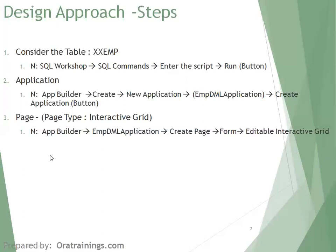The final step is creation of a page. If you're already in the application, simply click on Create Page. Or if you've navigated back to the main screen, go to App Builder, select the application you created, then click on Create Page. In Create Page, it shows different page types available in Apex — select the form type as Form, and then select Editable Interactive Grid.